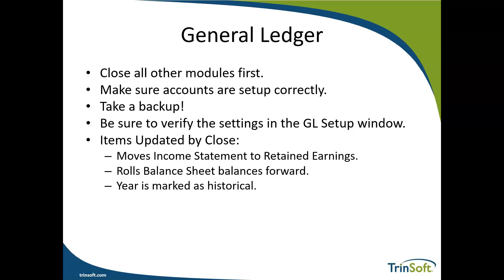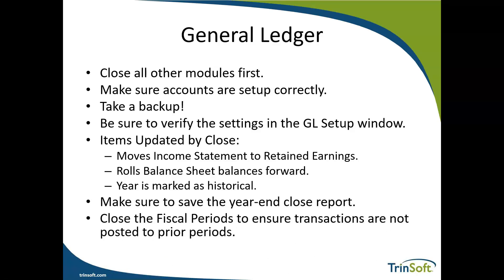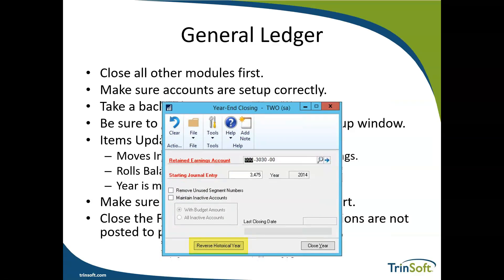Once the close process has run, you can save your year-end reports as needed. Once you've completed your general ledger close, go ahead and lock down the fiscal period so no users can enter into that period mistakenly. In the unfortunate event that something goes wrong during the close — an account marked incorrectly or something processed incorrectly — you can undo or reverse the year-end closing. To do that, go into the year-end closing option and select 'Reverse Historical Year' at the bottom. Alternatively, you can load the backup taken prior to the year-end close and re-perform those steps as needed.